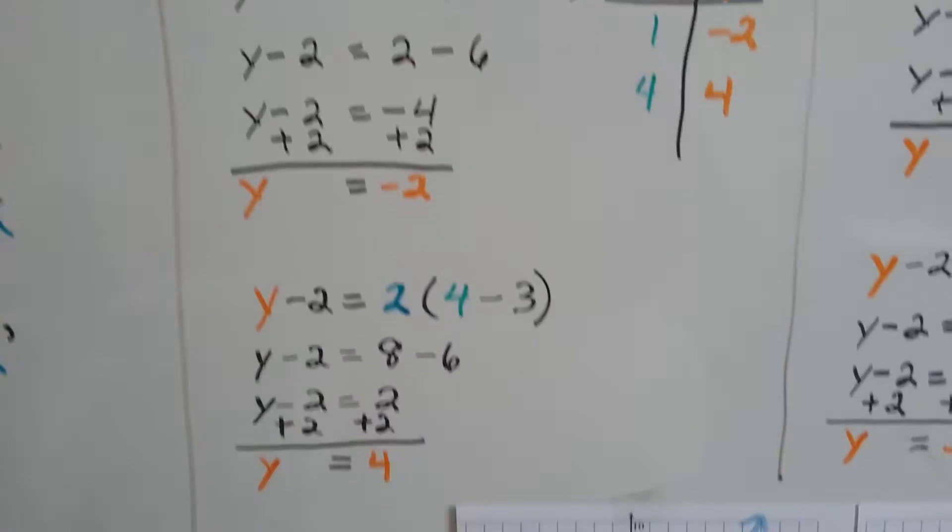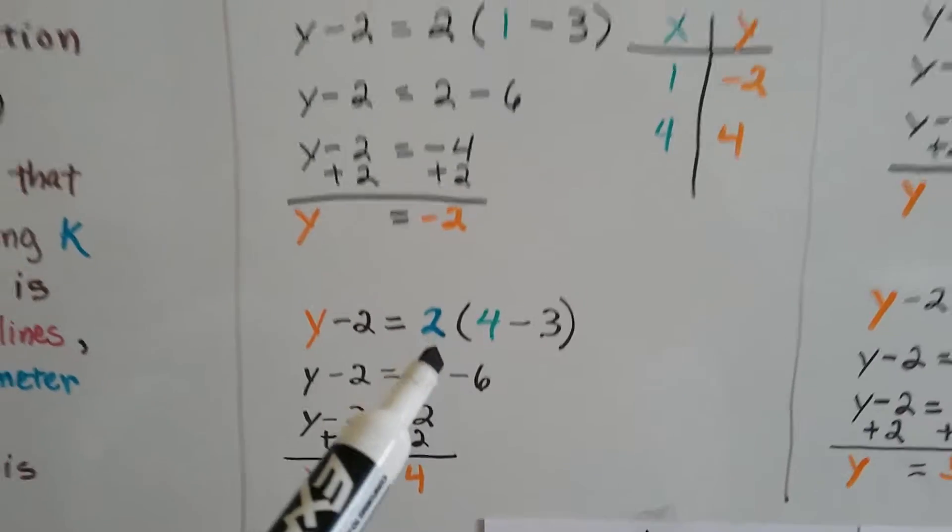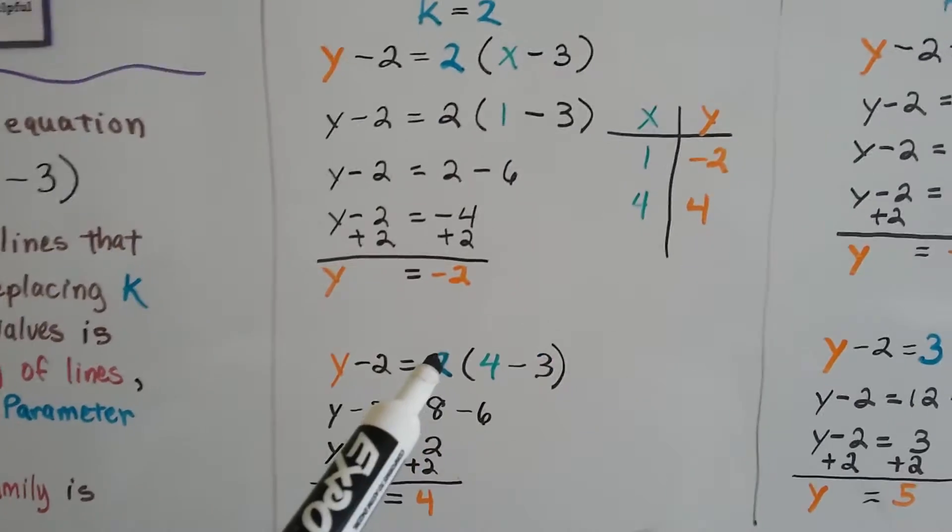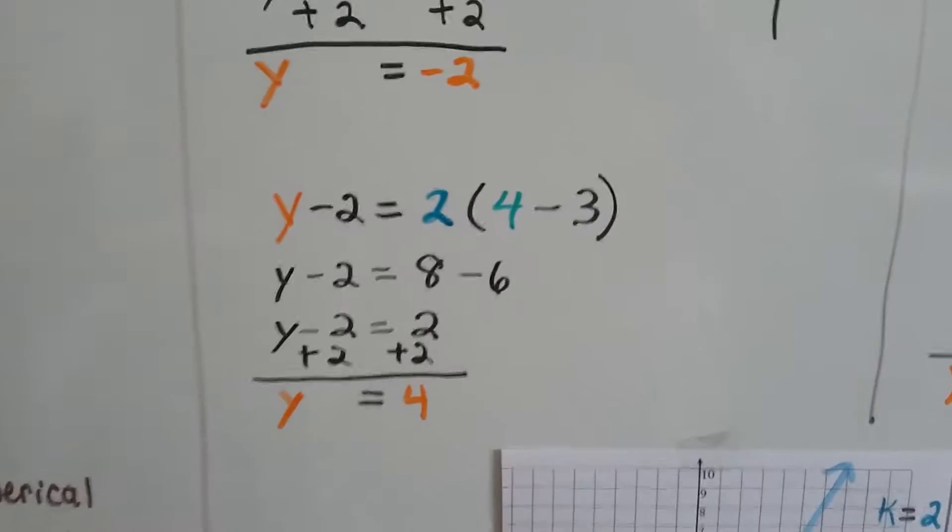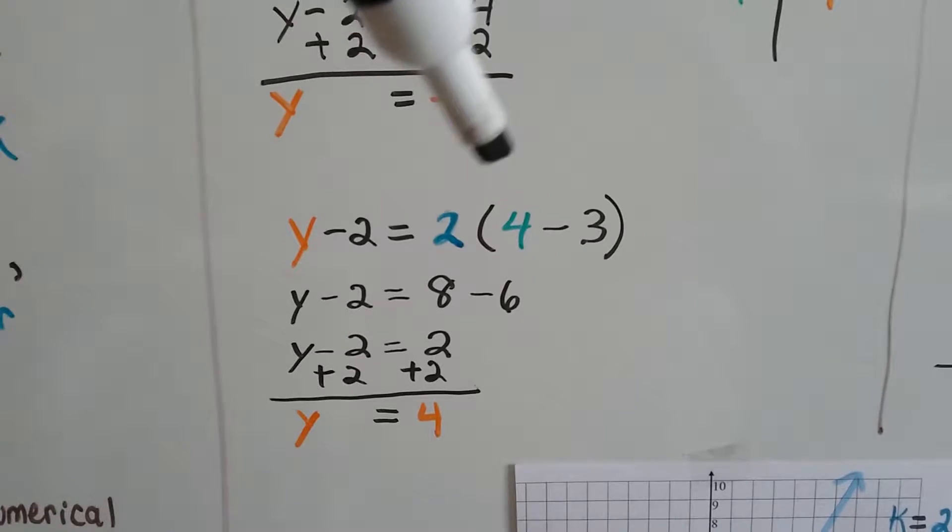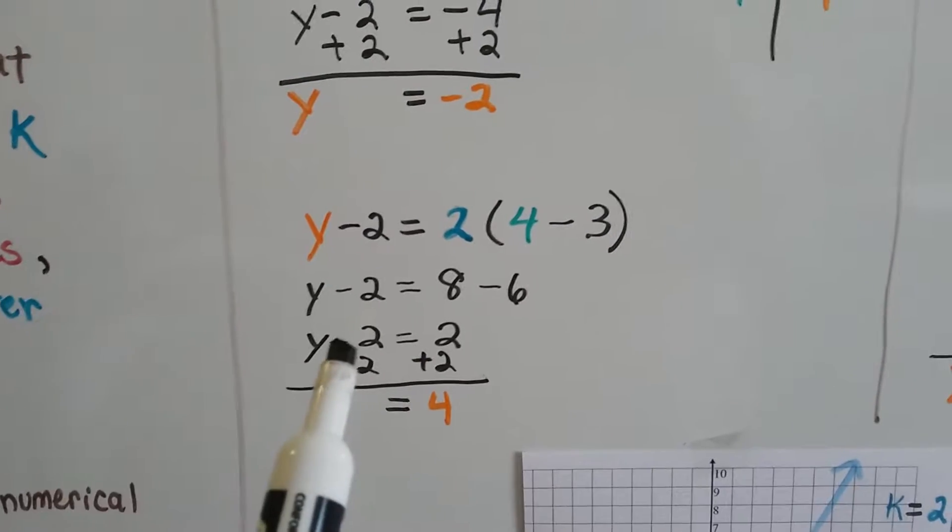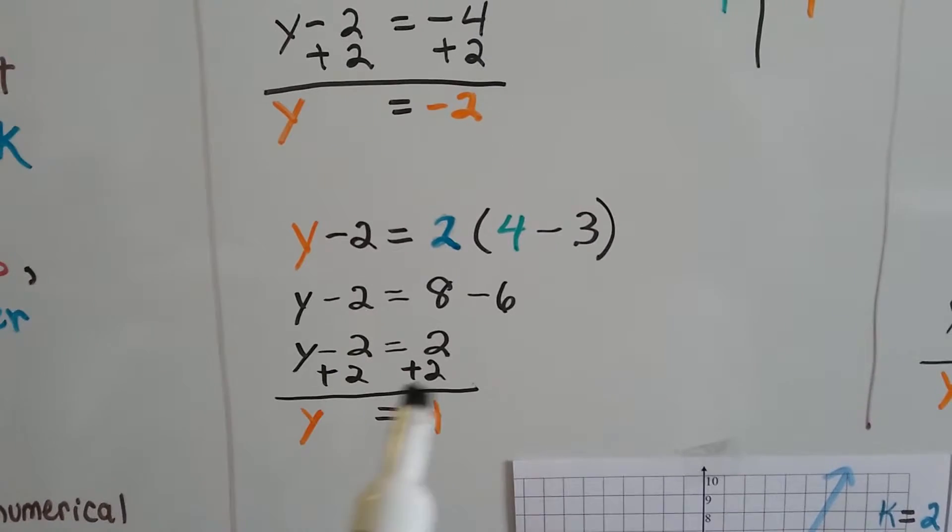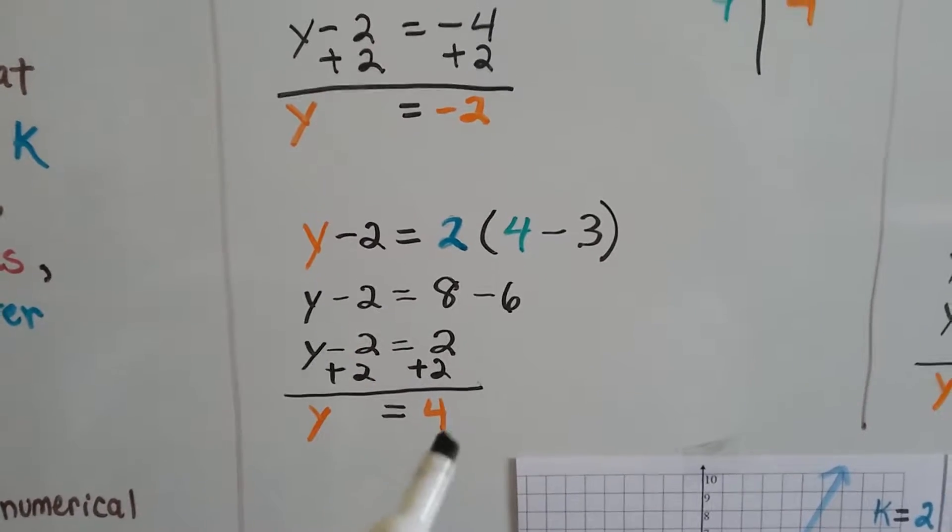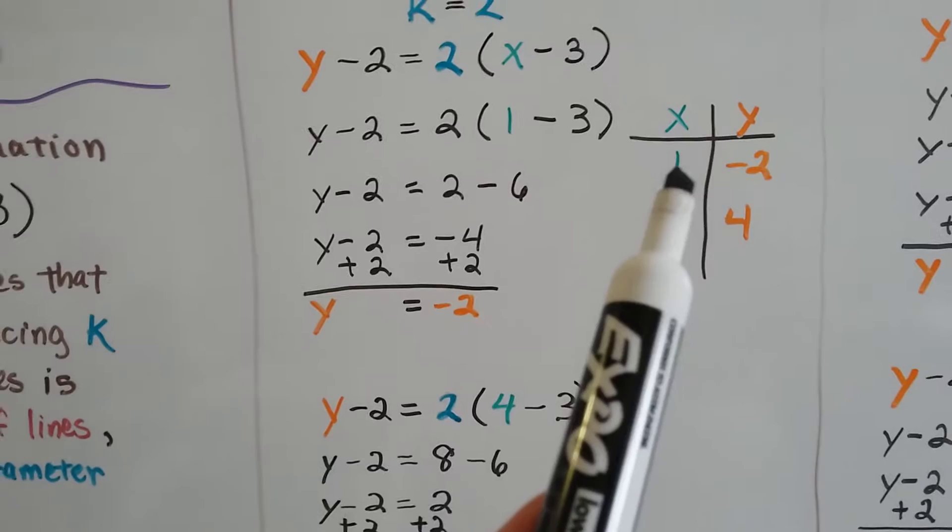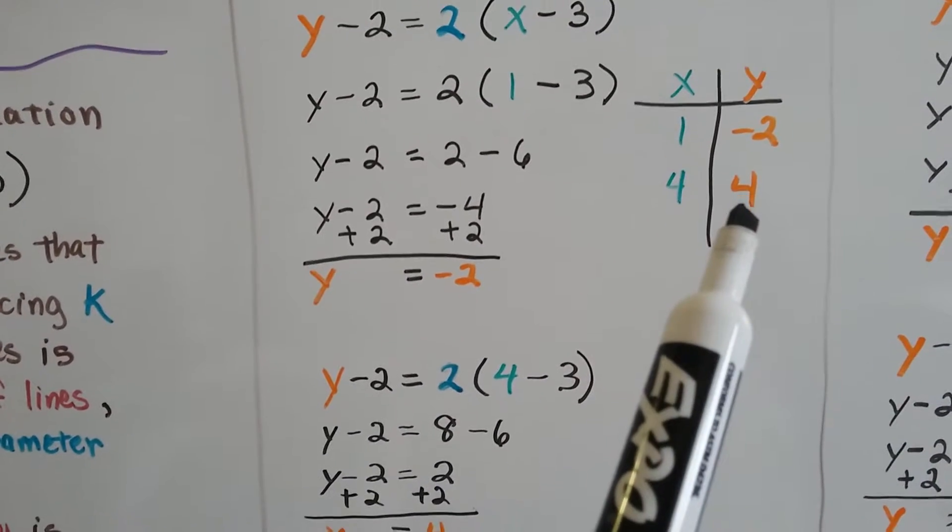Now we need to do it again because we need a second ordered pair in order to graph a line. It's still set to equal 2 for k. We're still in the k is 2, but now we're going to set x to equal 4. So now we've got 2 times 4 which is 8, and 2 times negative 3 which is negative 6. 8 take away 6 is 2. We need to isolate this y, so we're going to add 2 to each side again. And 2 plus 2 is 4, we get y is 4. So now we've got our ordered pairs: x is 1 and y is negative 2, and x is 4 and y is positive 4.